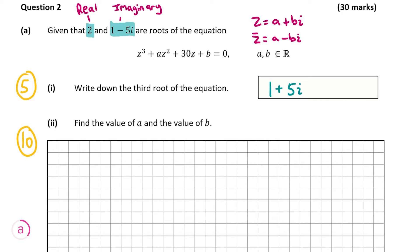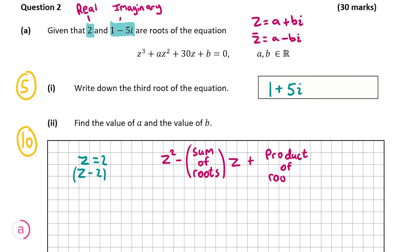One of our roots is 2, so that means z minus 2 is a factor. Then to form an equation with the two other roots — the two imaginary parts — we're going to use the rule: z squared minus sum of the roots times z plus product of the roots gives us a quadratic from the two imaginary roots. So I'll find the sum and product of the imaginary roots, then multiply by z minus 2, and put that equal to the equation in the question to find a and b.